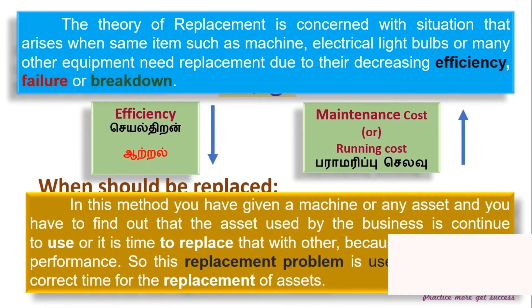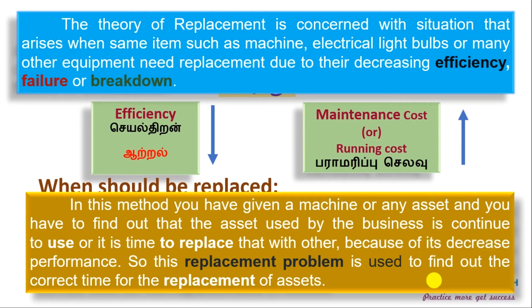In this method, you are given a machine or any asset and you have to find out whether the business should continue to use the asset or replace it. We look at how performance decreases over time, and find the correct time for replacement. This is what makes the replacement problem useful.